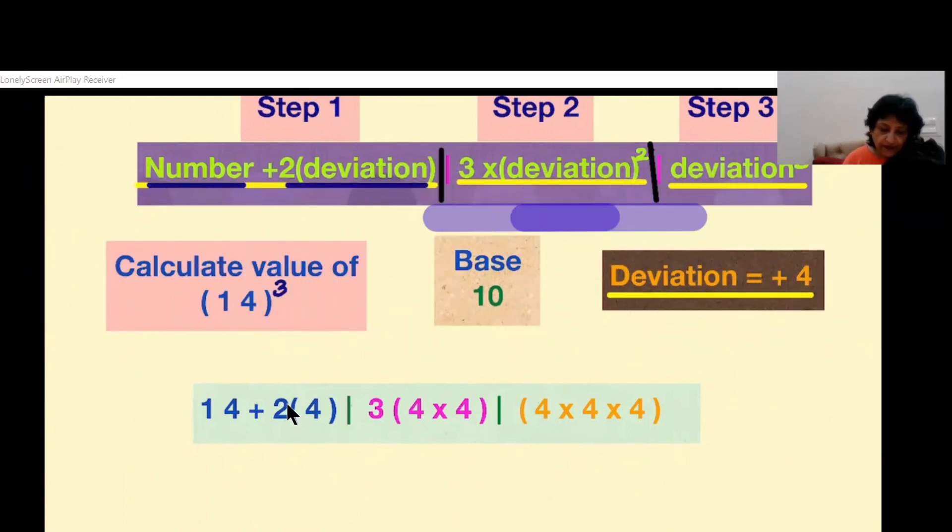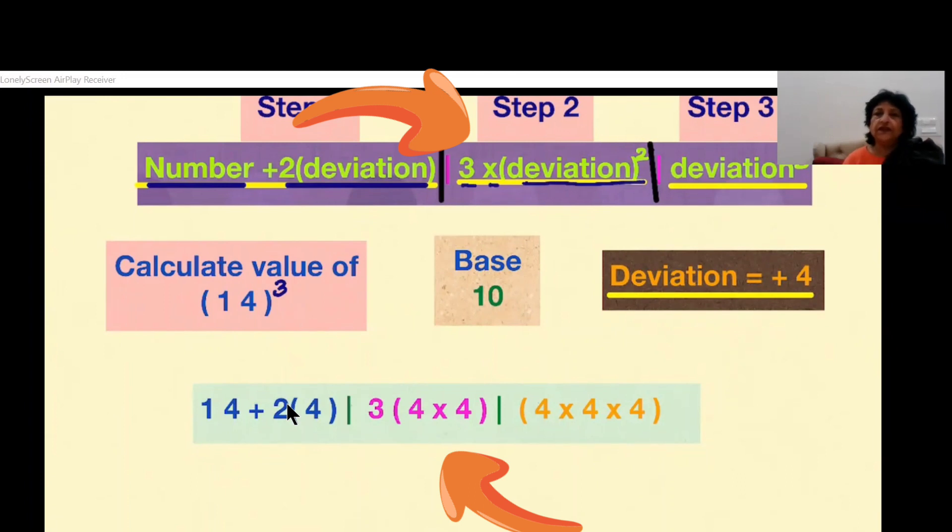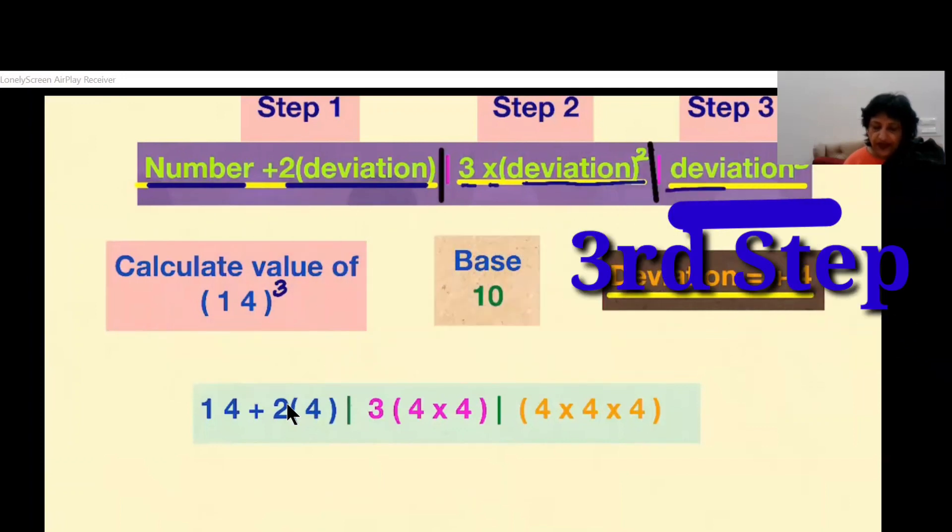The second step would be three times the deviation squared. In this case deviation is 4, so 4 squared is 16, and 16 into 3 will be 48. And the third step is that we have to take the deviation cubed. Let's now calculate the value of 14 cubed.